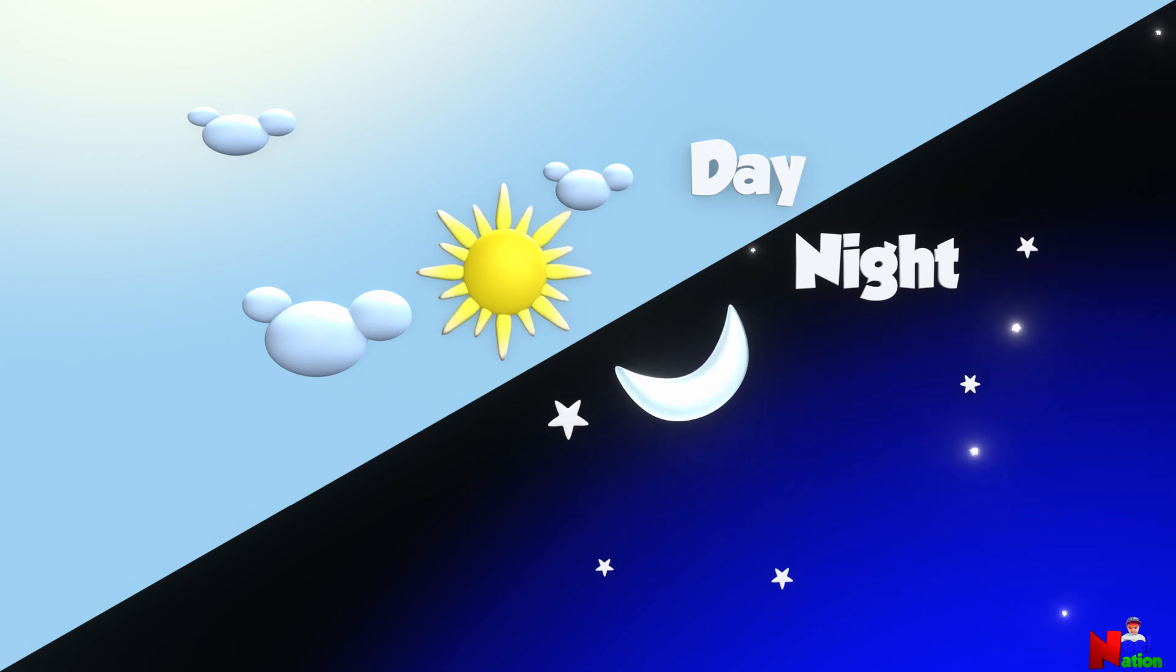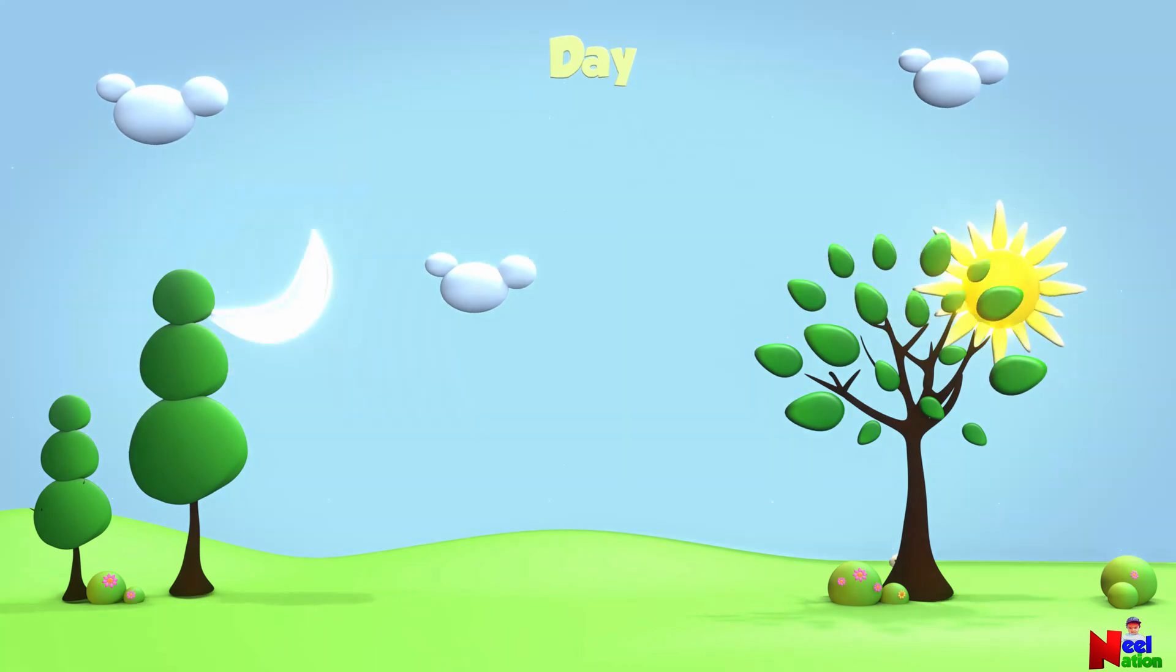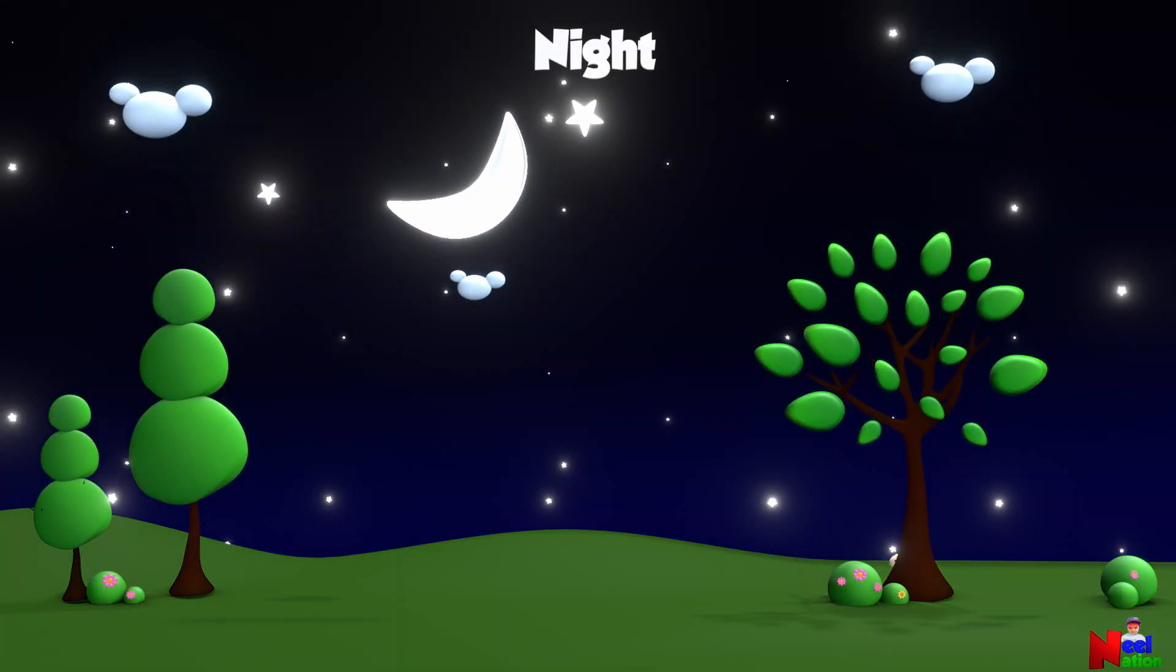Day and night is a normal part of our life here on Earth. When there is sun in the sky, it is day. And when there is no sun in the sky, it is night.